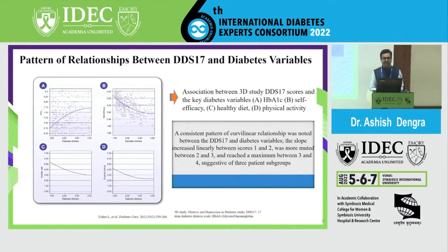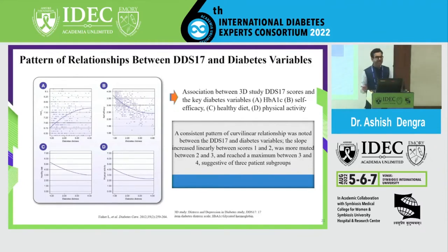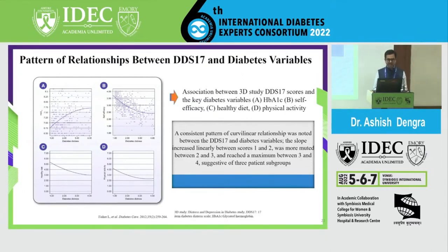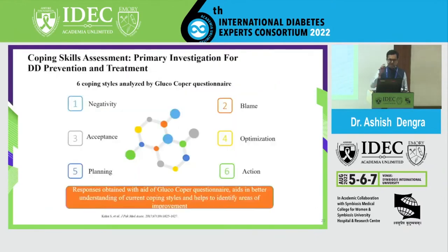The 3D study highlighted that the DDS-17 score is linked to key diabetes variables: HbA1c, self-efficacy, healthy diet, and physical activity. If the patient is experiencing diabetes distress, HbA1c will go high, diet control will be less, physical activity will decrease, and self-management will be poor. So if diabetes distress is overtaking a patient's life, they will have bad control of diabetes and leave diet and exercise behind.